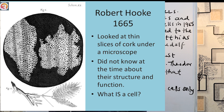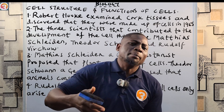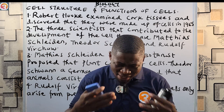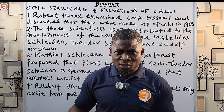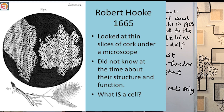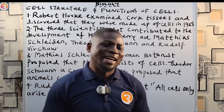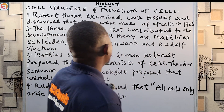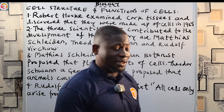He used the microscope to observe thin slices of the cork — a part of the bark of a tree. When he examined it under the microscope, he discovered that they were made up of compartments or boxes that looked like a honeycomb, as shown on your screen. Each compartment was separated by a wall, and inside each of those boxes was what we call a cell. Cells were discovered in 1665 by Robert Hooke, who examined cork tissues and found they were made up of cells.